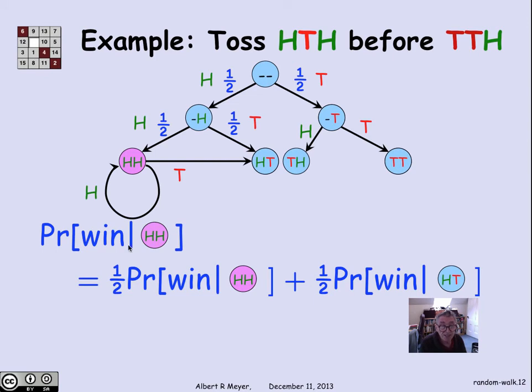And again, it's a linear equation connecting up the probability of winning in one state with the probability of winning in other states, possibly itself. There's no circularity here, just a system of linear equations.